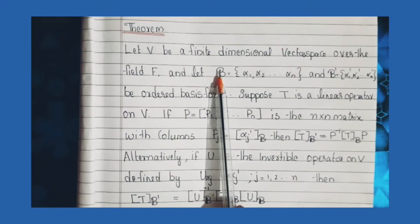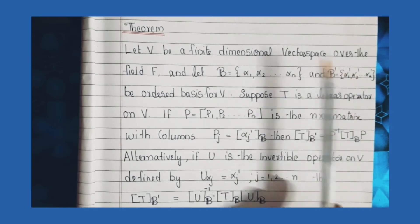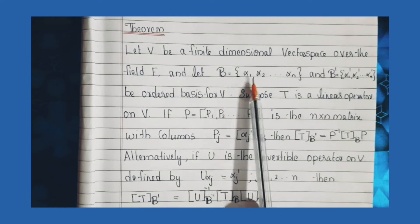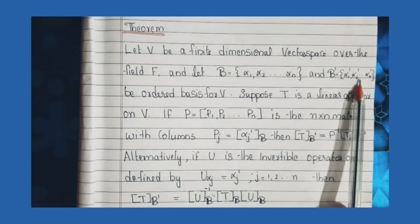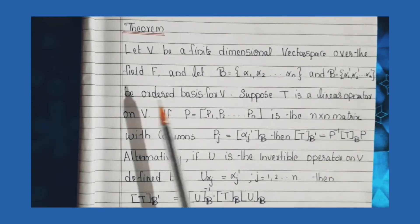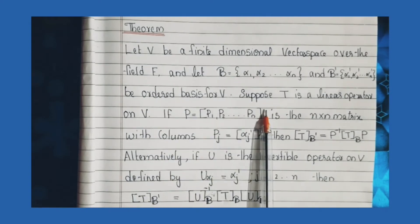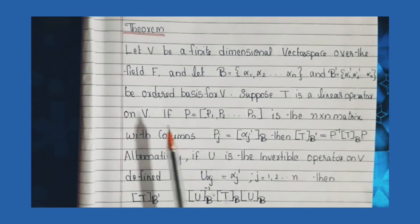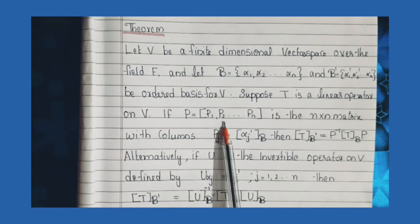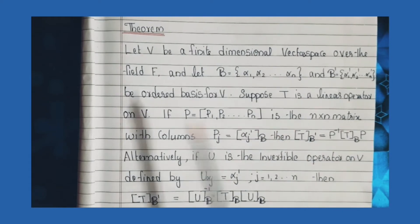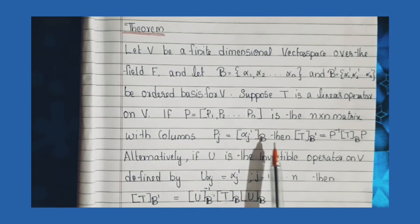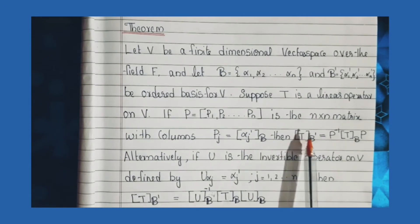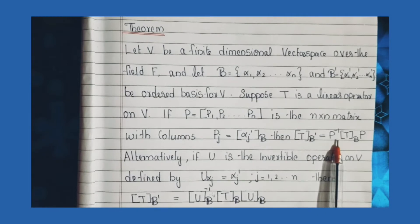Next theorem: Let V be a finite dimensional vector space over the field F, and let B equal to {alpha 1, alpha 2, ..., alpha n} and B' equal to {alpha 1', alpha 2', ..., alpha n'} be ordered bases for V. Suppose T is a linear operator on V. If P equals matrix [P1, P2, ..., Pn] is the n by n matrix with columns Pj equal to the matrix of alpha j' related to B, then the matrix of T related to B' is equal to P inverse times the matrix of T related to B, times P.